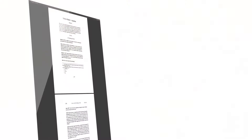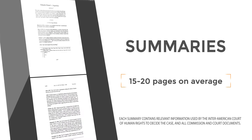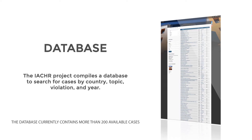The first feature is the summaries themselves. The summaries are 15 pages long on average and contain all essential information regarding each case decided by the Inter-American Court of Human Rights. The second feature of the project is the database. As students summarize the decisions, they gather data, then they code it, and this is fed into a searchable database.